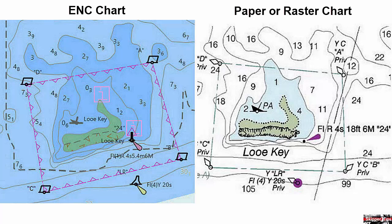Paper and raster charts show soundings in a specific unit and this cannot be changed. The ENC chart shown here to the left shows soundings in meters, but you have the option through a menu to change this to feet or fathoms.